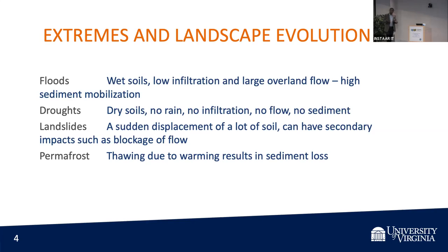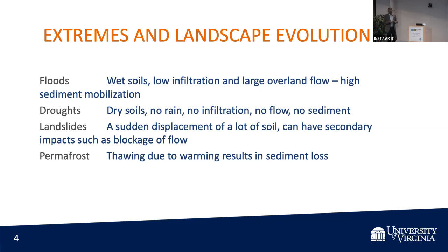With droughts, you have dry soils — you hardly have any rain or infiltration, no flow and no sediment supply. Landslides are a sudden displacement of the soil and can cause secondary effects like blockage of flow. Permafrost thaw is suddenly becoming a very important factor in high mountain Asia, parts of Alaska, and parts of Siberia, where you have soil which can be eroded.